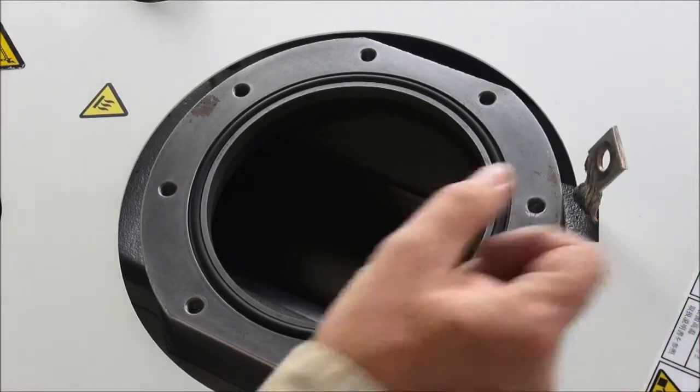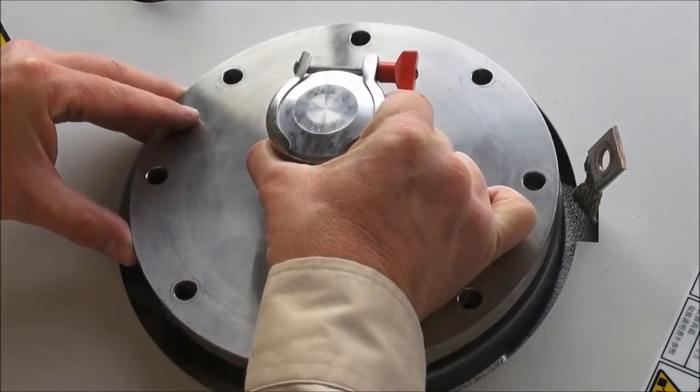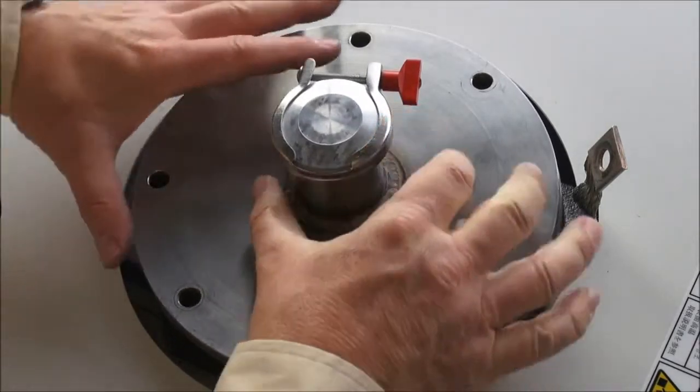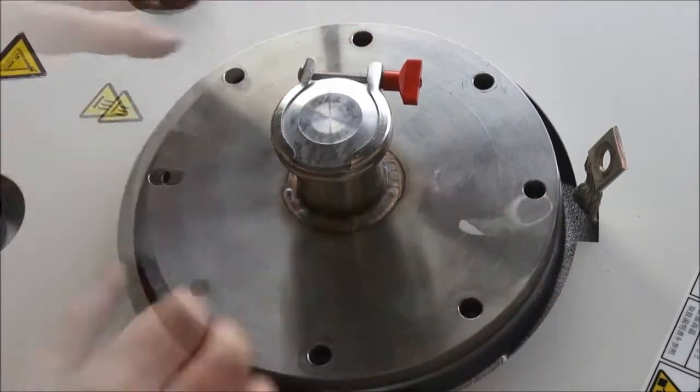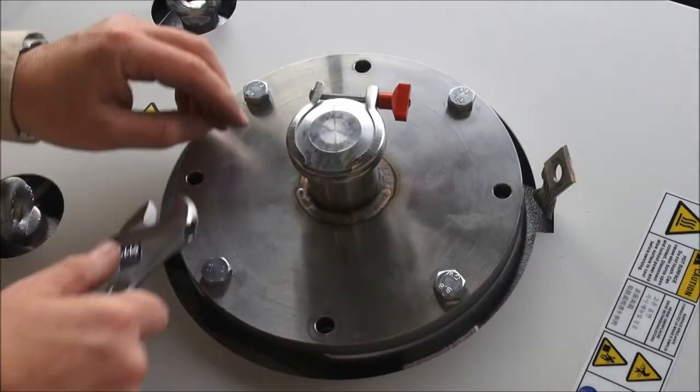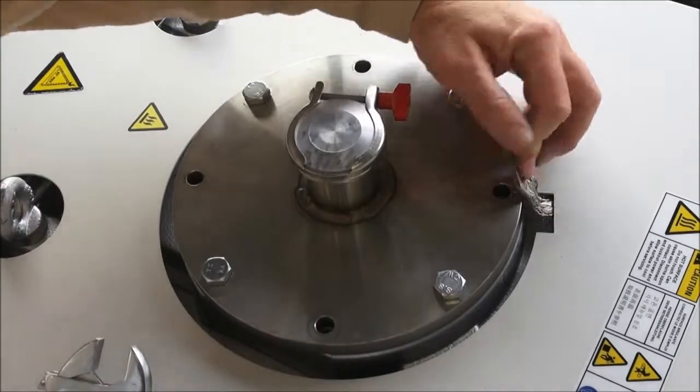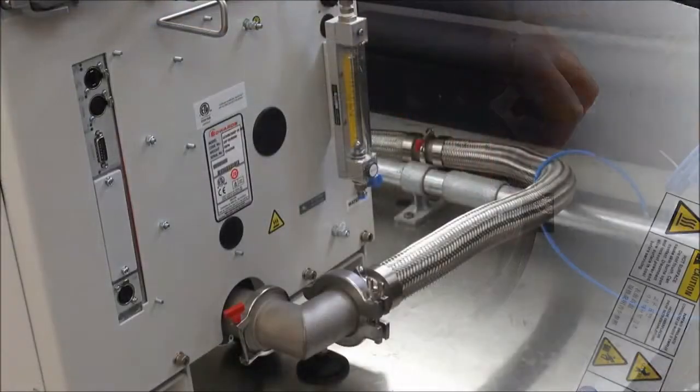There is an earth bonding strap next to the inlet which should be used to earth or ground the pump to the incoming vacuum connection metalwork. Carefully locate your inlet flange and use appropriate fixings to make sure it is correctly mounted, mechanically secure and fully vacuum tight. The earth ground strap should be attached using one of the bolts.